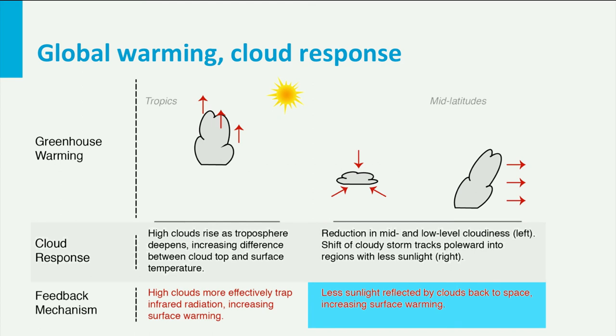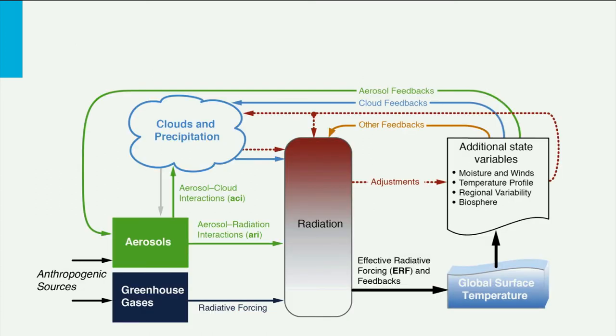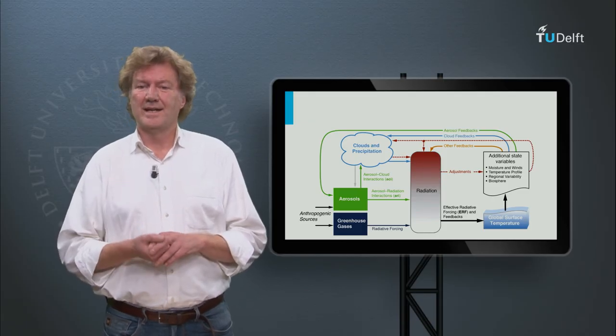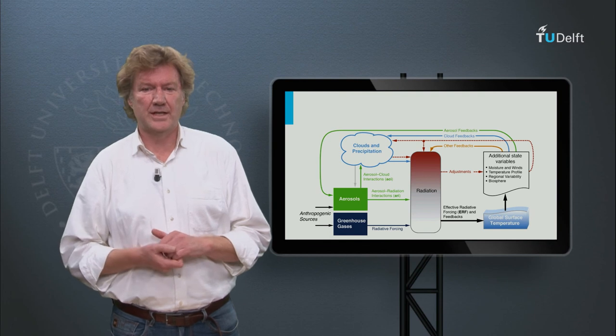Warmer air at the equator also drives clouds towards the poles, where there is less solar light to reflect, so the cooling effect decreases. Understanding the role of clouds in the climate system requires putting many elements together: how much aerosols and greenhouse gases are emitted, how this changes the radiation balance, what impact radiation changes have on surface temperature, how that affects evaporation and sensible heat fluxes, how that in turn affects cloud and rainfall formation, and how that feeds back into the radiation balance.